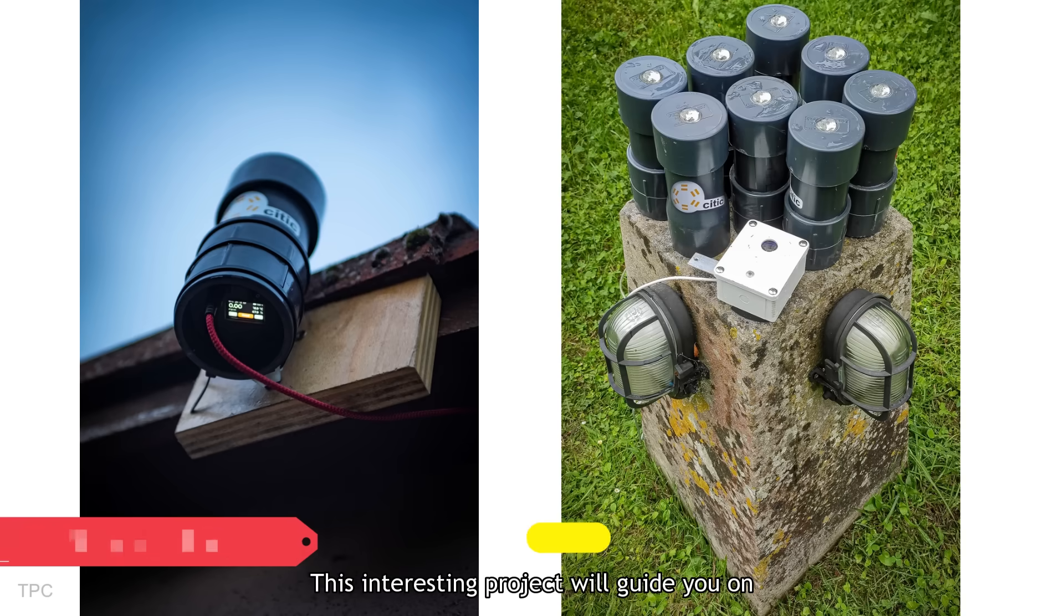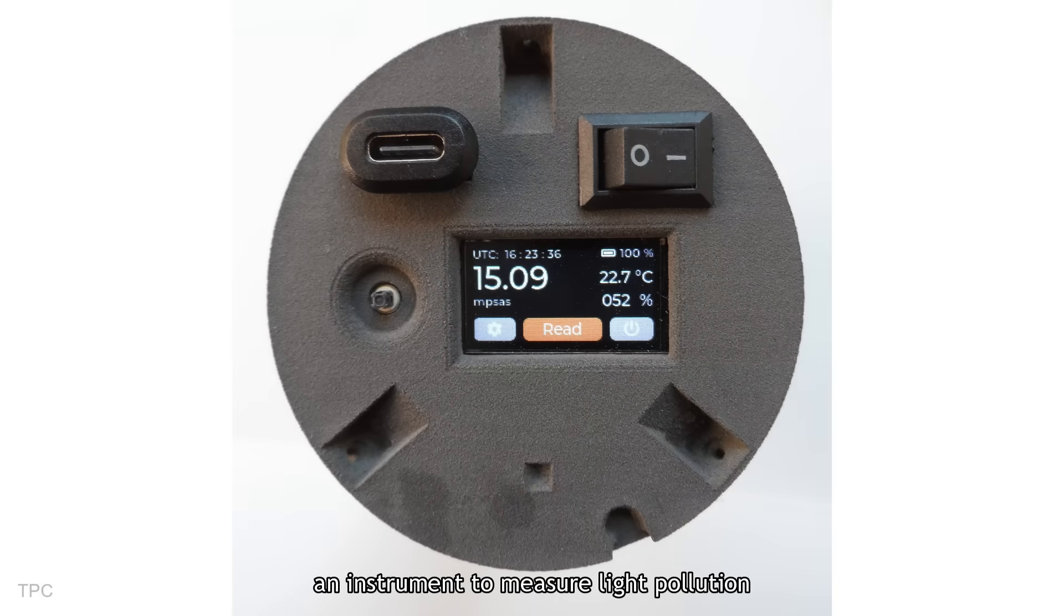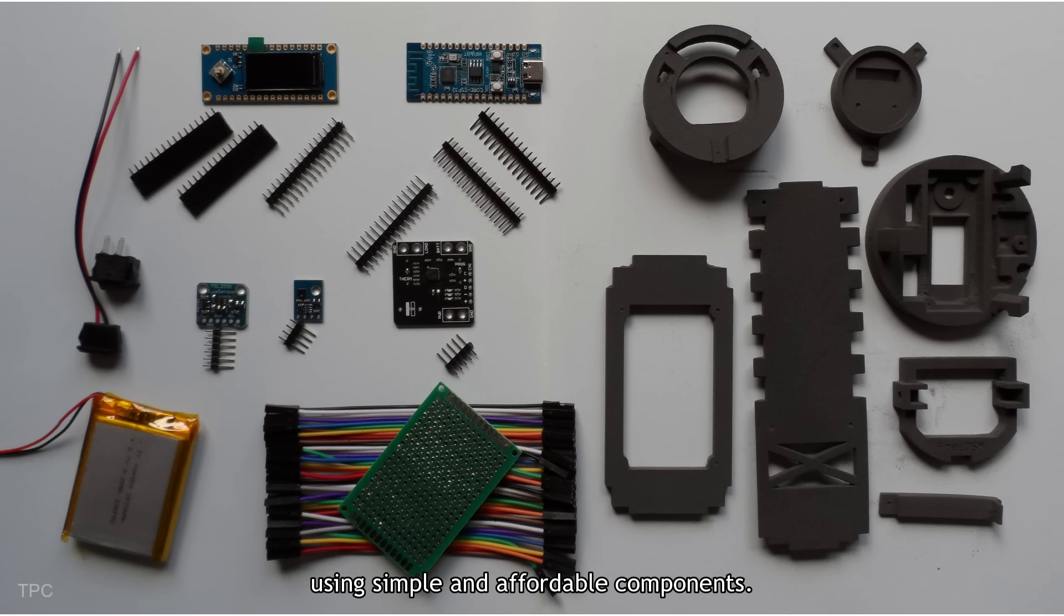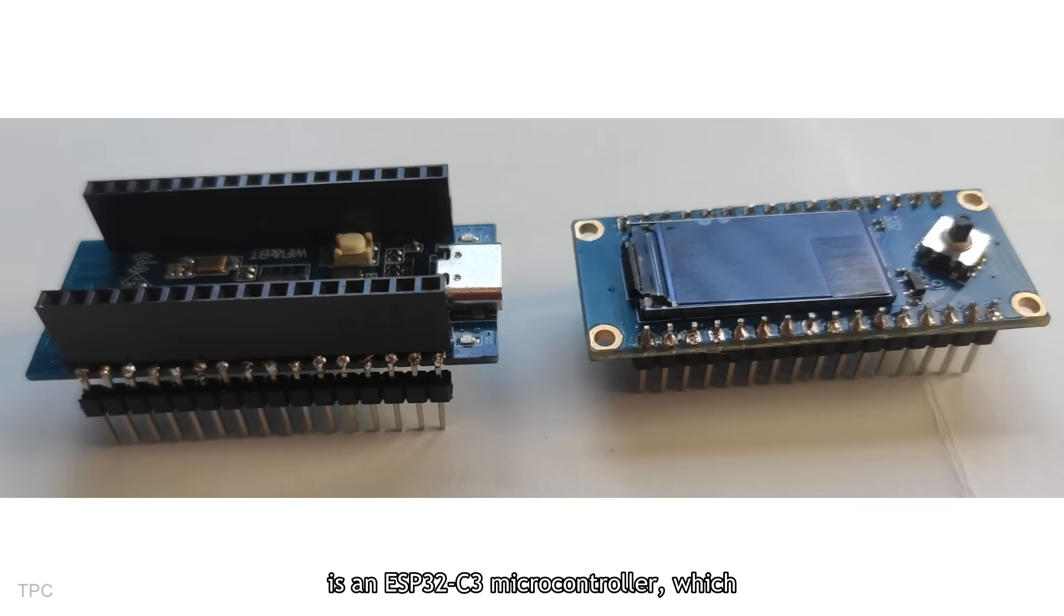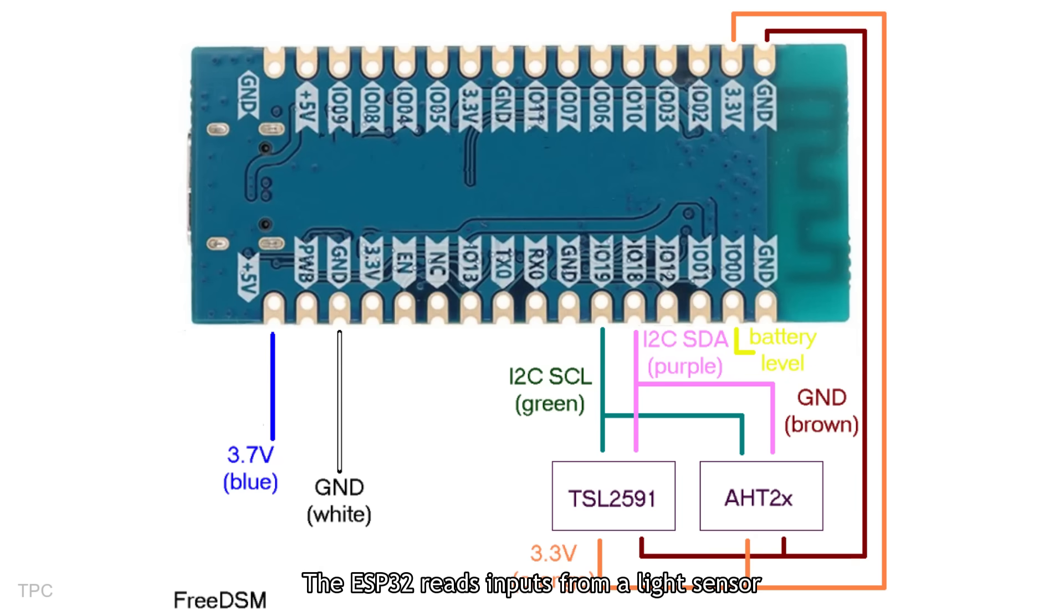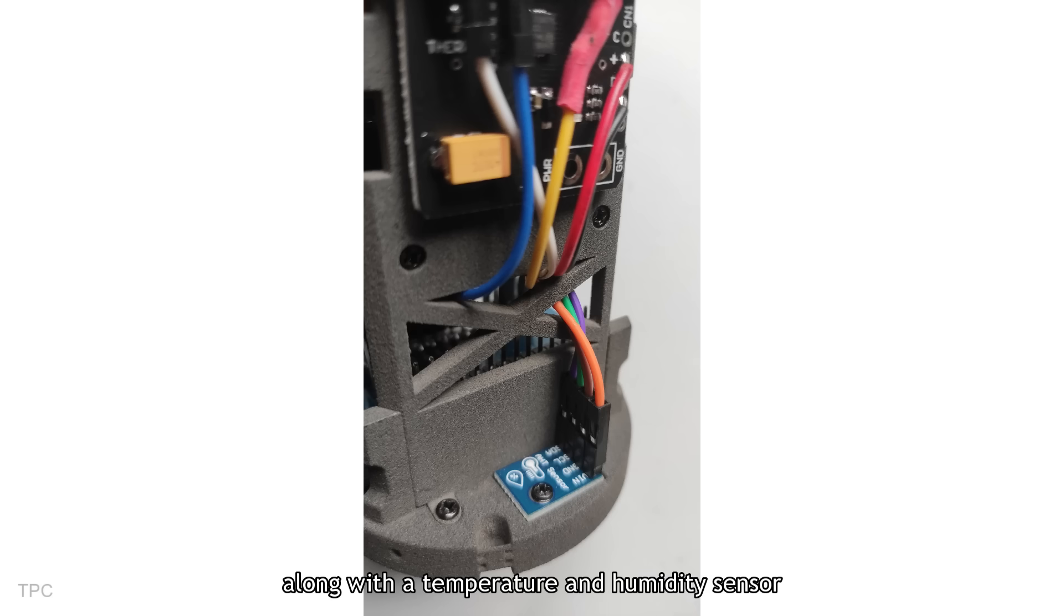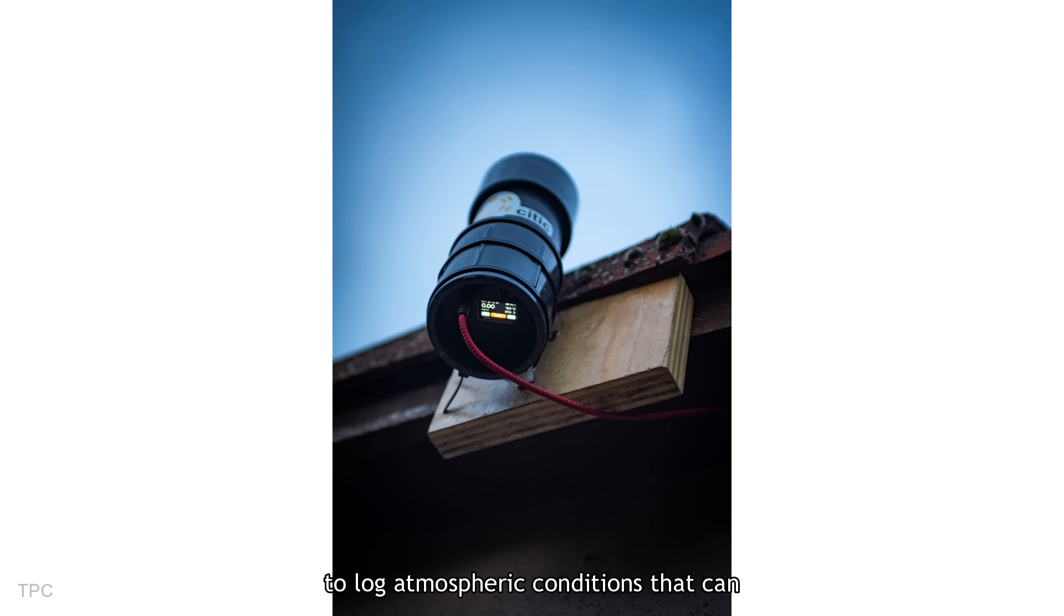This interesting project will guide you on making a DIY-free dark sky meter, an instrument to measure light pollution using simple and affordable components. At its core is an ESP32-C3 microcontroller, which handles data collection and wireless communication. The ESP32 reads inputs from a light sensor to measure sky brightness, along with a temperature and humidity sensor to log atmospheric conditions that can affect light pollution readings.